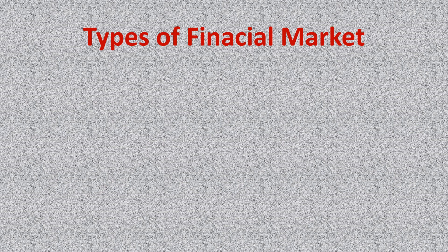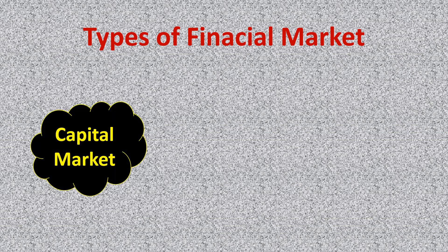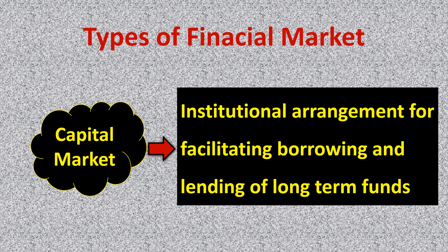The first type is the capital market. The capital market is the institutional arrangement for borrowing and lending of long-term funds. It is the market where long-term finance is bought and sold.